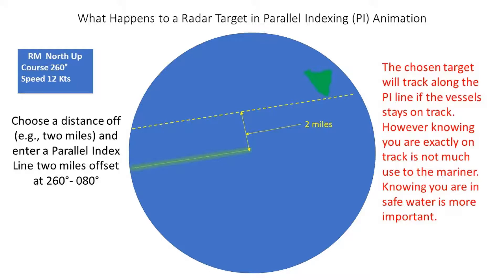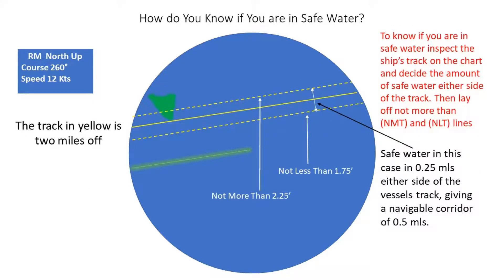However, knowing you're exactly on track is not much use to the navigator — knowing you're in safe water is more important. To know if you're in safe water, inspect the ship's track on the chart and decide the amount of safe water either side of the planned track. Then lay off 'not more than' and 'not less than' lines on the radar.